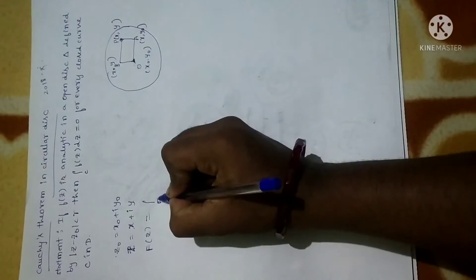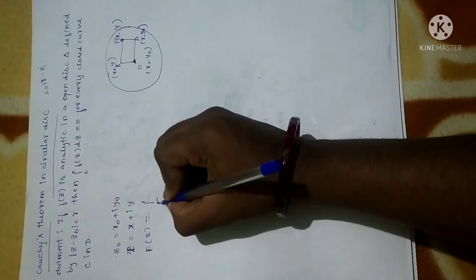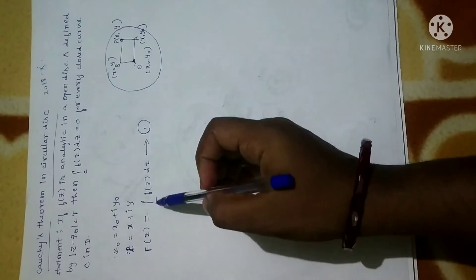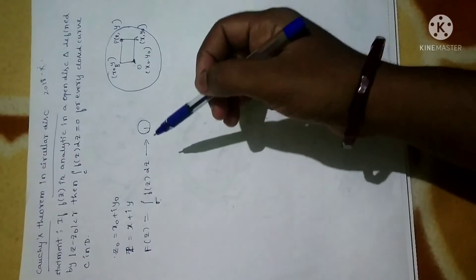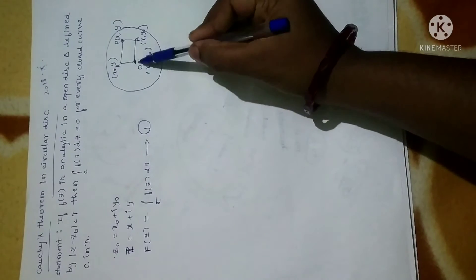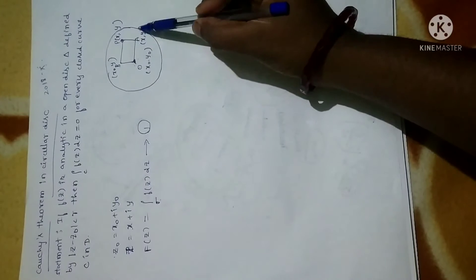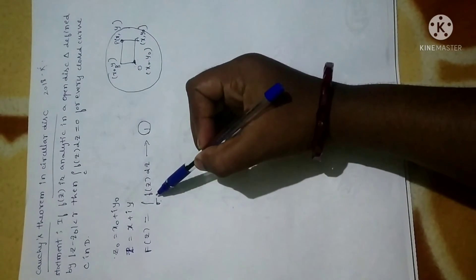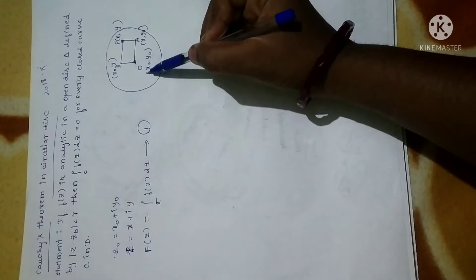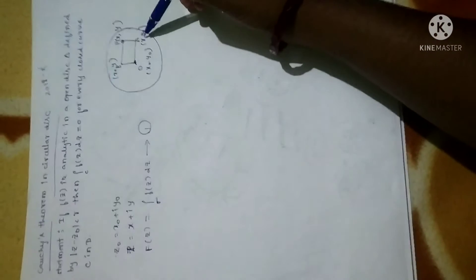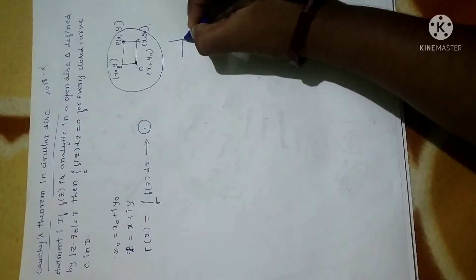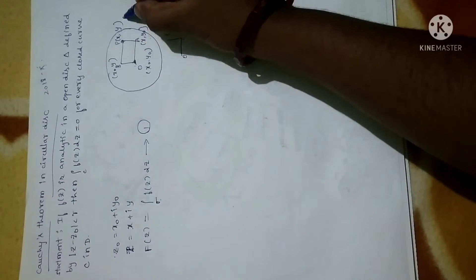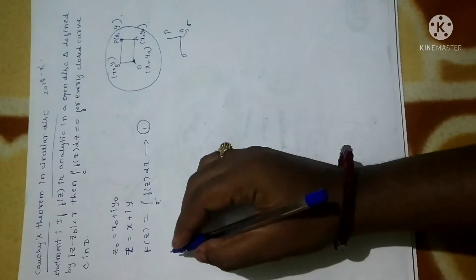Now let me define the function F(z) = ∫σ f(z) dz — let me take this as equation 1 — where sigma consists of a horizontal segment OA from center (x₀, y₀) to (x, y₀), and a vertical segment from (x, y₀) to (x, y). So sigma is the path O to A and A to P.